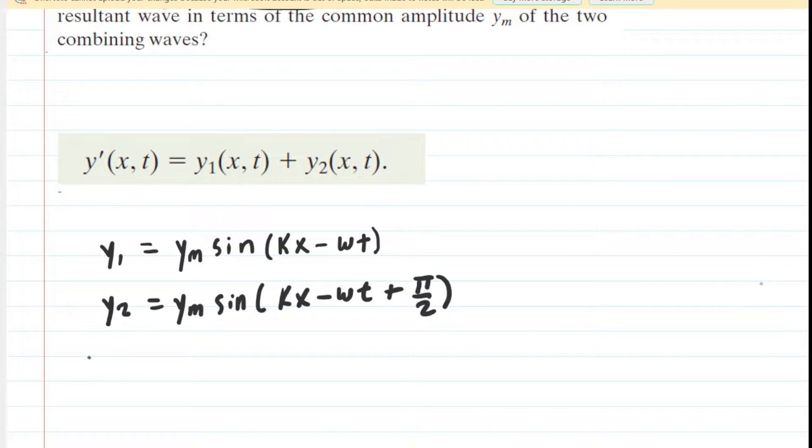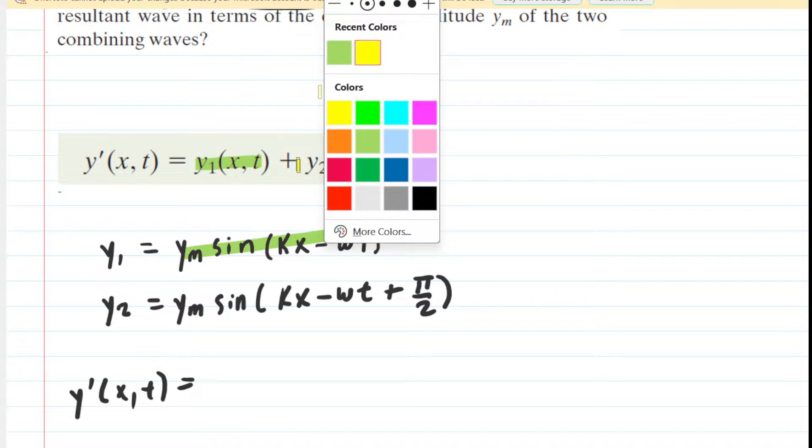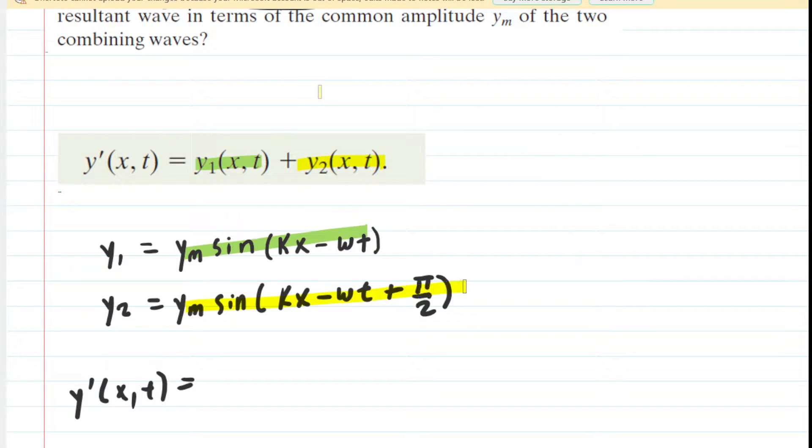The principle of superposition tells us that to get the resultant wave, all we need to do is add these two together. We're going to add y_1, which is this equation, to y_2, which is this equation. So let's write that out.